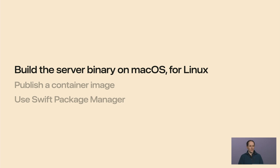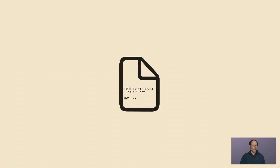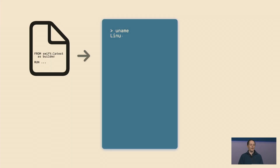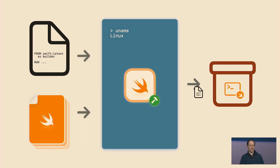So let's start by looking at our options for building the server binary. You've probably built a container image on macOS before, and it might not have been completely obvious — but when you did that, you were actually compiling on Linux itself. You'd have started off by writing a recipe explaining how to build and package your service. Depending on the container runtime software you were using, you might have called it a container file, a Docker file, a Podman file, or something like that. You handed this recipe to your container runtime, and behind the scenes it actually ran a Linux virtual machine, copied your code in, and then inside the VM it ran the Linux version of the Swift compiler to build a Linux binary, which it then put in the container image. But there is another way that we could build that Linux binary — using the Swift compiler that we already have on macOS.